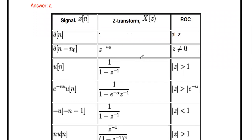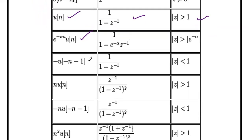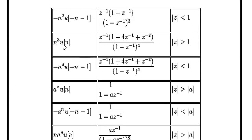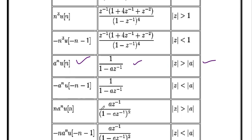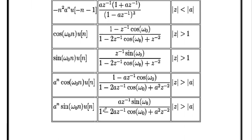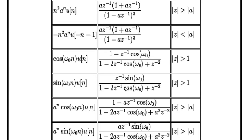Here is a summary table of standard Z-transform pairs and their ROCs: δ[n] → 1 (entire Z-plane); δ[n-n₀] → z^(-n₀); u[n] → z/(z-1); aⁿu[n] → z/(z-a), ROC |z|>a; -aⁿu[-n-1] → z/(z-a), ROC |z|<a; e^(-αn)u[n] → similar form; n·u[n] (ramp) → z/(z-1)²; n²u[n]; cos(ω₀n)·u[n]; sin(ω₀n)·u[n]; aⁿcos(ω₀n)·u[n]; aⁿsin(ω₀n)·u[n]. These are standard answers you can use to answer any related questions.